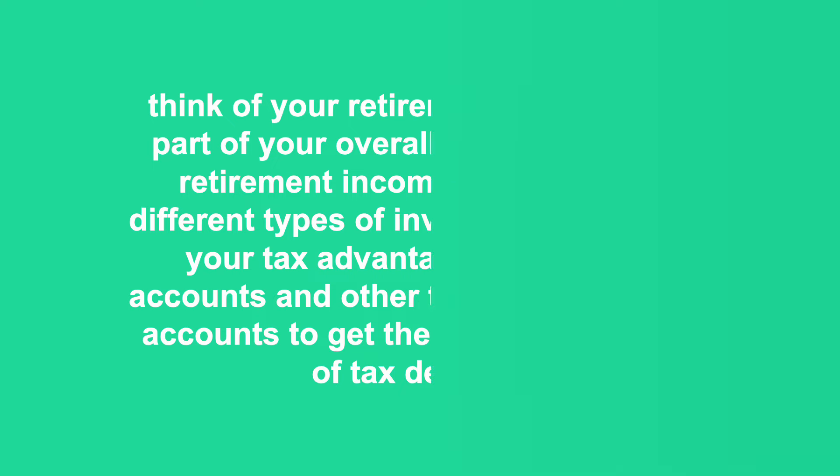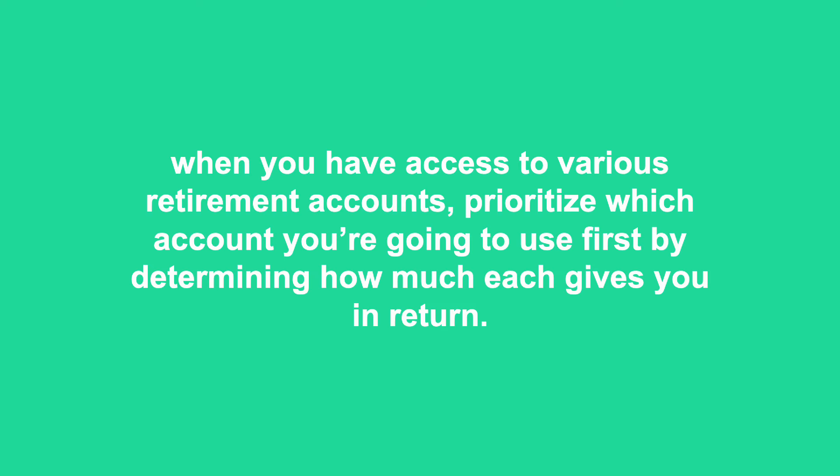When you have access to various retirement accounts, prioritize which account you're going to use first by determining how much each gives you in return. You should focus your contributions in this order: first, fund employer-based plans that match your contributions; next, contribute to any other employer or self-employed plans that allow tax-deductible contributions; after that, contribute to an IRA; and finally, if you max out on IRA contributions or exceed income limitations, consider a Roth 401k, employer-offered after-tax contributions, and then an annuity.